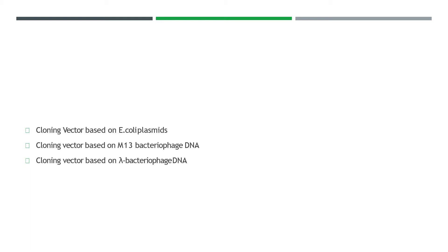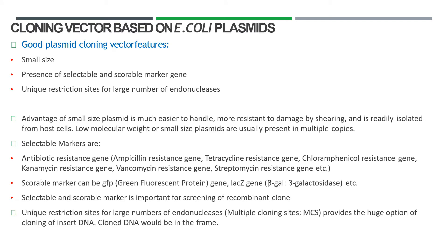Let's talk about cloning vectors based on E. coli plasmids and why they are good. The reasons are clearly stated: it has a small size, presence of selectable as well as scoreable marker genes — I'll be explaining scoreable marker genes in more detail in coming videos — and the third feature is unique restriction sites for a large number of endonucleases.